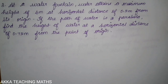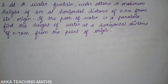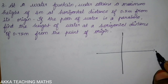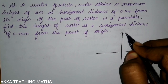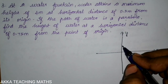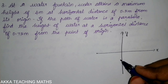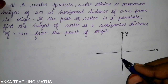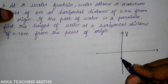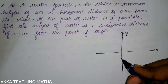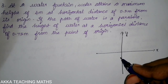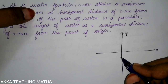So, this is the third question. Let's say you can find the point. At your water fountain, water attains a maximum height of 4 meters at a horizontal distance of 0.5 meters.